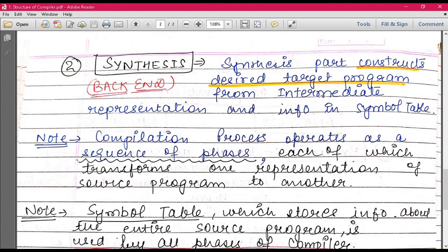We had made the intermediate code representation for that. So what will it do? Finally, you will create a desired output, a desired target program from the intermediate representation that you have made in the previous phase. And also, it will use the information from the symbol table.